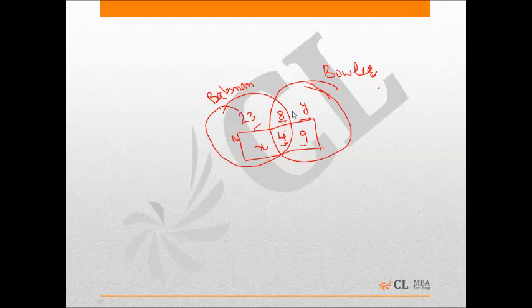So the bowlers in category B will be Y. From this, 23 plus 8 plus 4 plus 9 plus X plus Y equals 72, where X plus Y turns out to be 28. X represents the number of batsmen in category A and Y represents the number of specialist bowlers in category B.